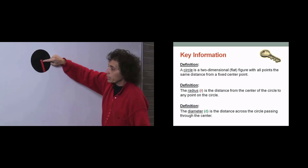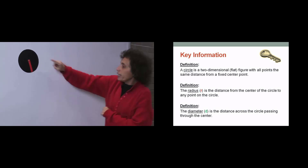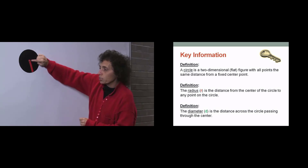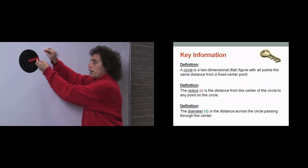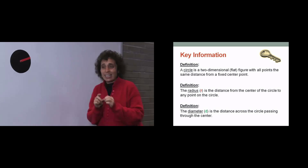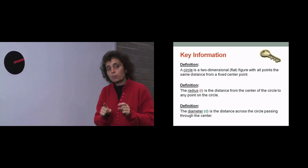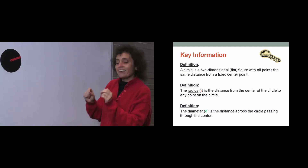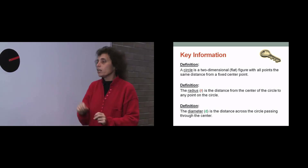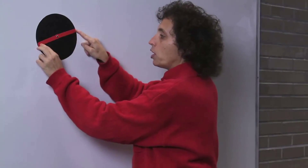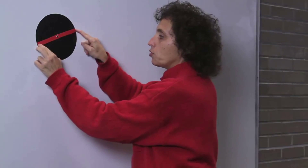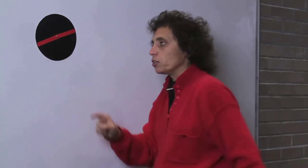A radius is a line segment from the center to any given point on the circle — I can go here, or here, or here, anywhere I want. We also have a diameter. A diameter is actually made up of 2 radii together. It is a line segment formed by passing through the center, connecting 2 points on the circle. That is a diameter of the circle, and notice it is made up of 2 radii.